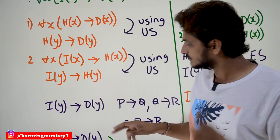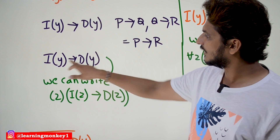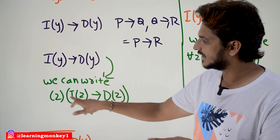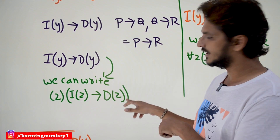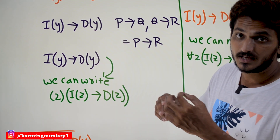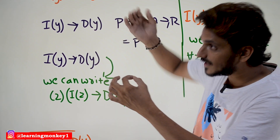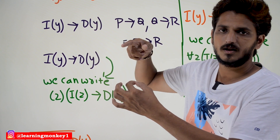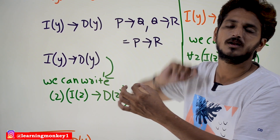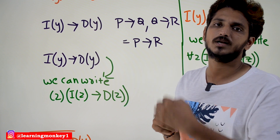So y is a free variable which derived from 'for all x.' That's why we can conclude that i(y) implies d(y) can be written as for all z, i(z) implies d(z). Because y is a variable already derived from the universal quantifier, that's why we can write it.